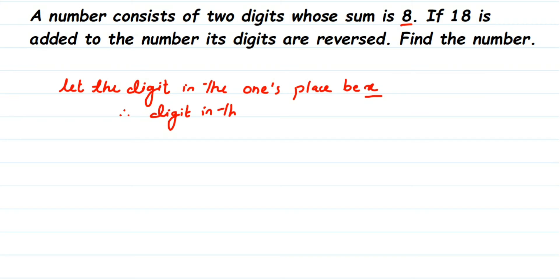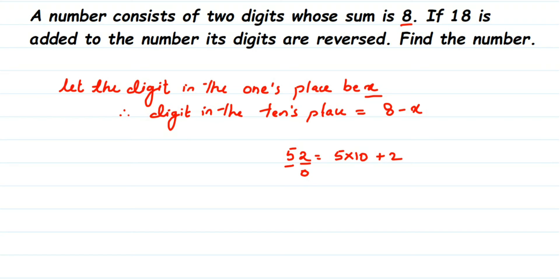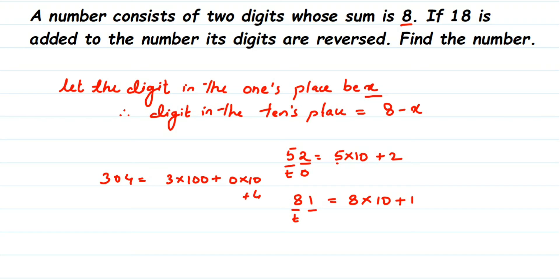The digit in the tens place is 8 minus x. Now, recall place value expansion: 52 can be written as 5 × 10 + 2, because 5 is in the tens place and 2 is in the ones place. Similarly, 81 = 8 × 10 + 1. For a three-digit number, the hundreds digit is multiplied by 100, tens digit by 10, and ones digit by 1.